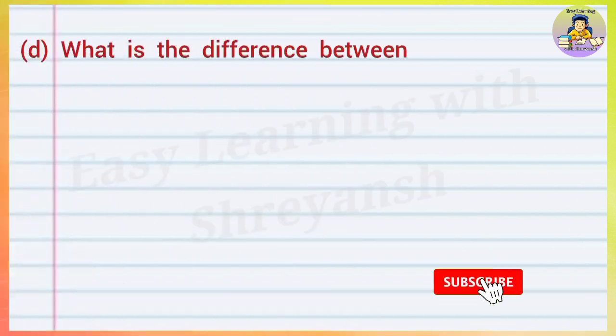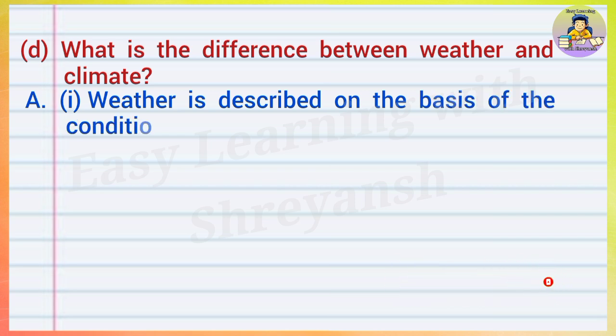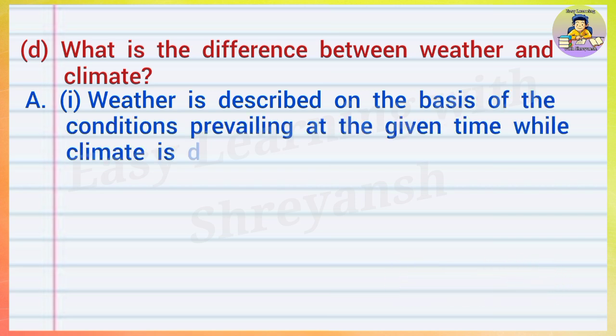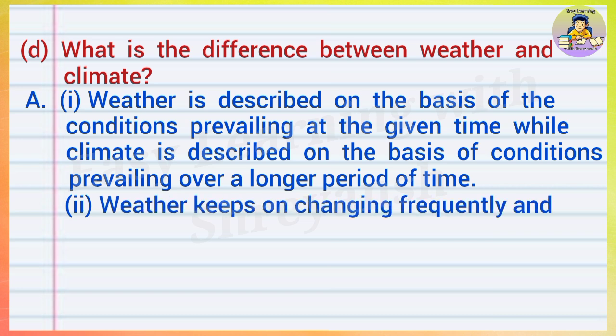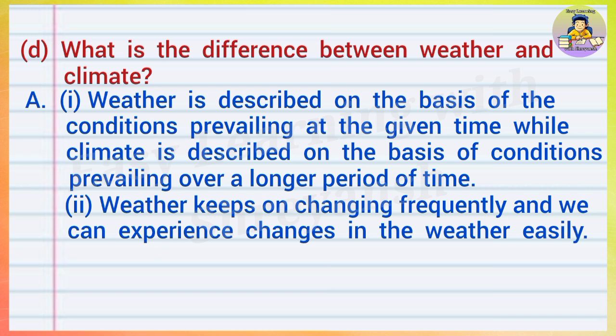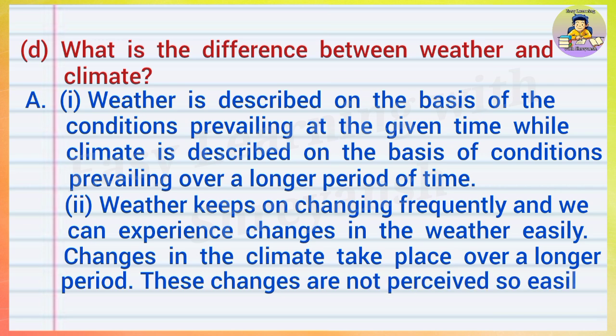(d) What is the difference between weather and climate? Answer: Weather is described on the basis of the conditions prevailing at the given time, while climate is described on the basis of conditions prevailing over a longer period of time. Weather keeps on changing frequently and we can experience changes in the weather easily. Changes in the climate take place over a longer period; these changes are not perceived so easily.